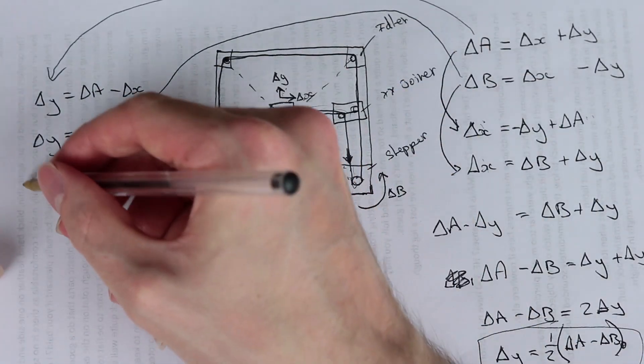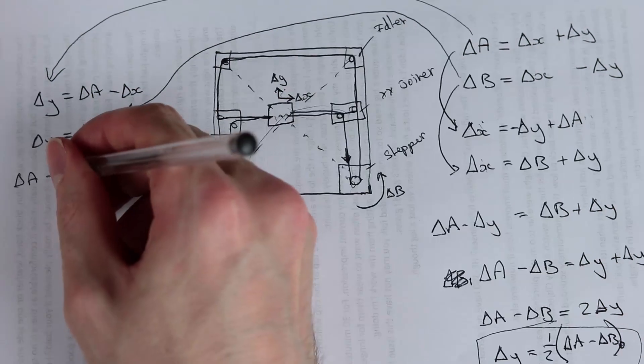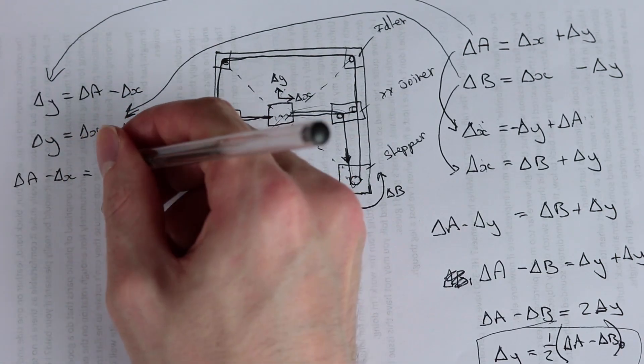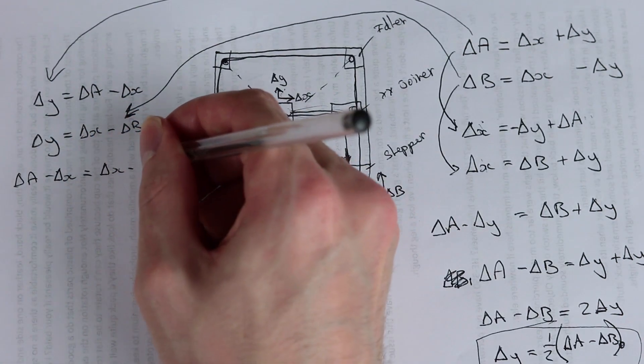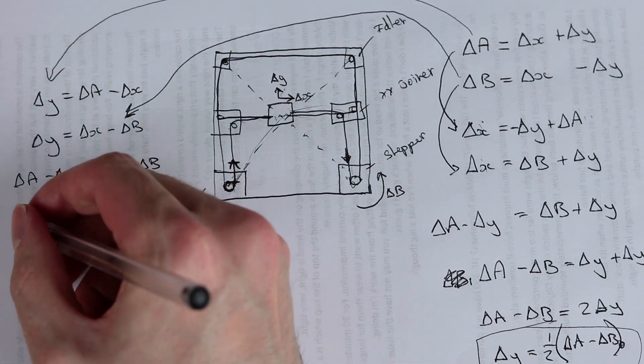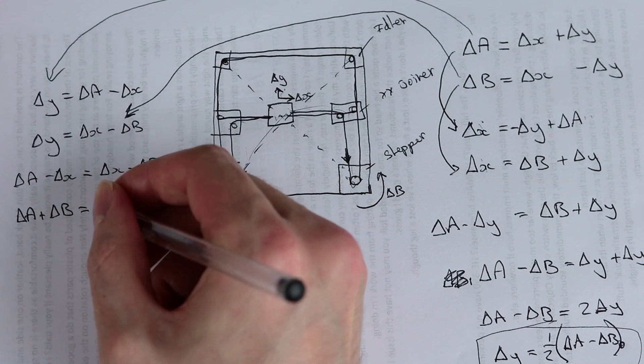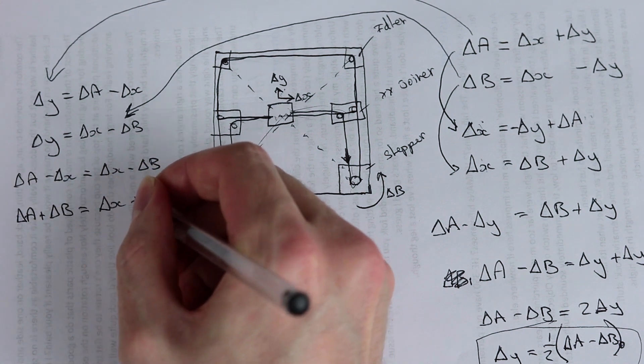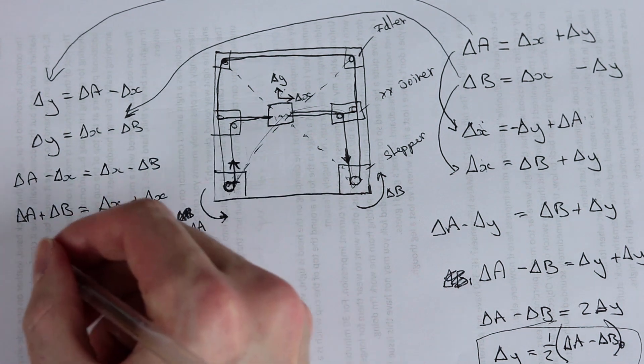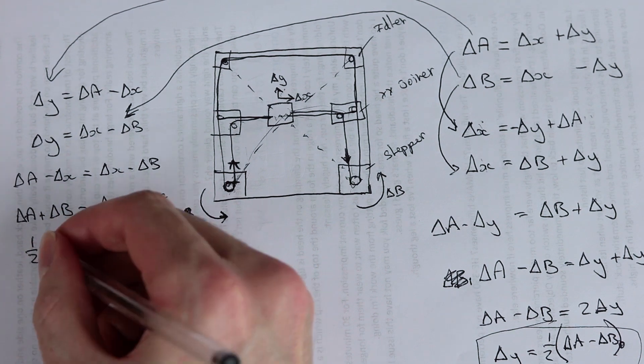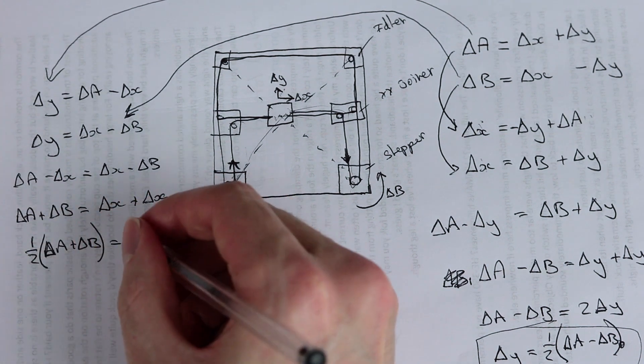And then again, we make them the same. So delta A minus delta X equals delta X minus delta B. So then we have delta A plus delta B equals delta X plus delta X. Or a half delta A plus delta B equals delta X.